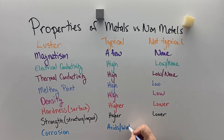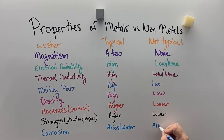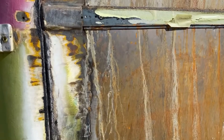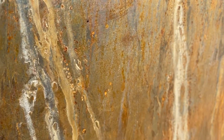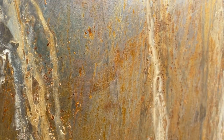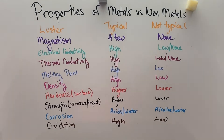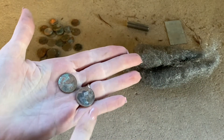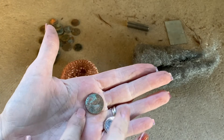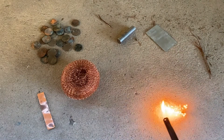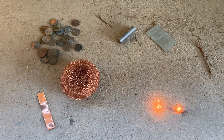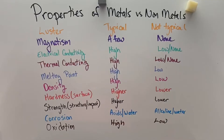Corrosion weakens substances to less useful forms. With metals, it tends to happen with acids and water. With non-metals, it tends to happen with alkaline substances, water, or UV light. Here we can see the side of a vehicle has been corroded over time due to exposure to water and oxygen. As far as oxidation goes, metals can oxidize slowly — like tarnish — or even rapidly, like this steel wool. Non-metals tend not to oxidize as quickly.